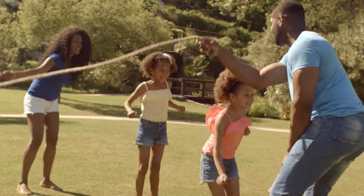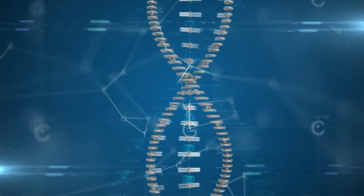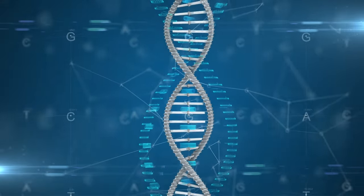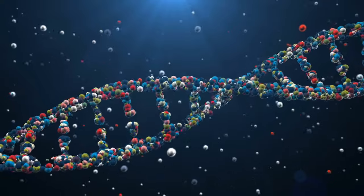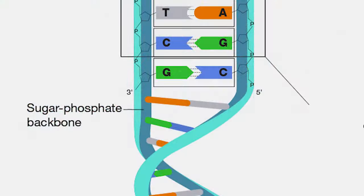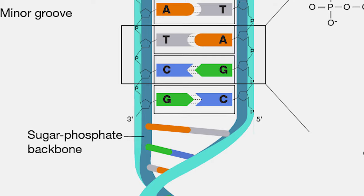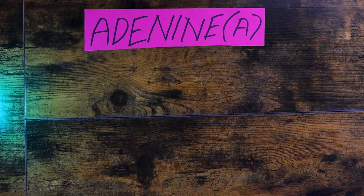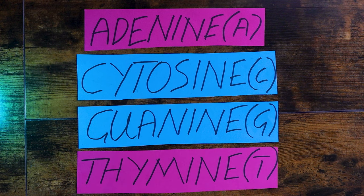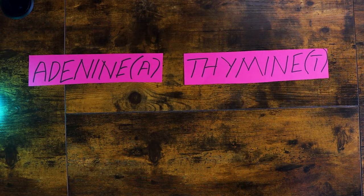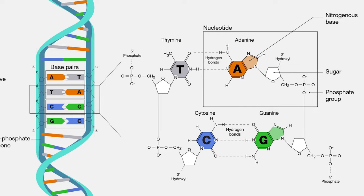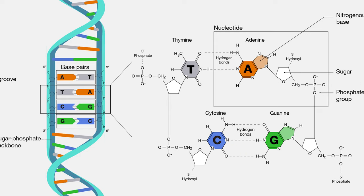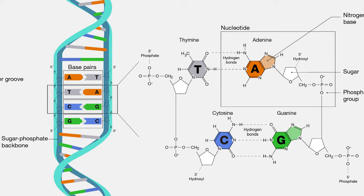DNA exists in every cell in your body and holds your genetic code, making up your body's instruction manual. DNA is made of two linked strands that wind around each other to resemble a twisted ladder, a shape known as the double helix. Each strand has a backbone made up of alternating sugar and phosphate groups. Attached to each sugar is one of four bases: adenine, cytosine, guanine, and thymine. The two strands are connected by chemical bonds between the bases — adenine bonds with thymine, and cytosine bonds with guanine. There are an estimated 3 billion bases in your body, about 99% of which are the same in every person. The remaining 1% or so is what makes you unique.